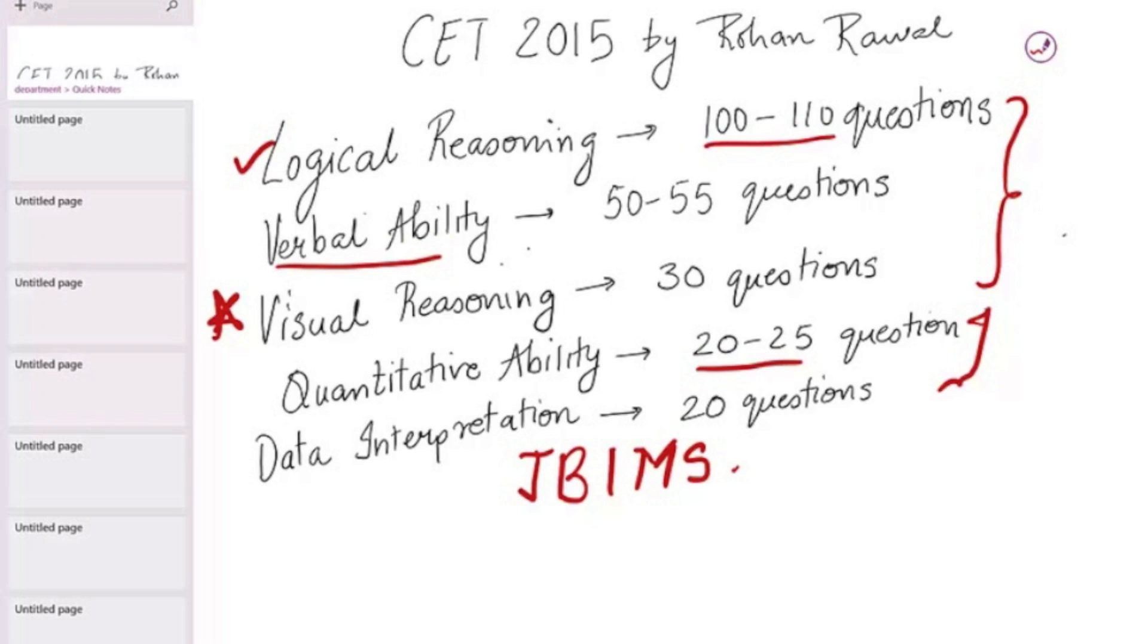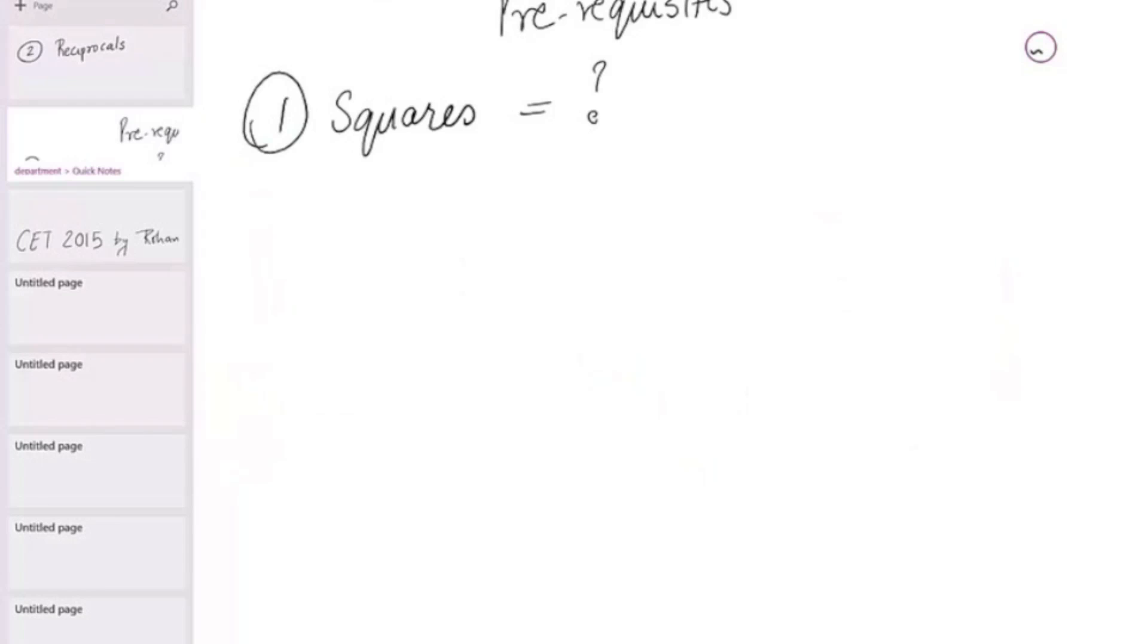Alright, so let's have a look at every section and what is important in each section. So I'll start with a few of my favorite sections, which is quant, DI and visual reasoning, and slowly and sadly move towards LR and verbal ability. Alright, let's take it forward from here. Before we dig into any of these sections of CET, let's formulate a few prerequisites of CET.